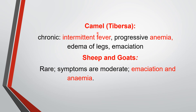In camels, trypanosomiasis is called Thilbursa or Tine Bursa. Generally, a chronic form is found. Characteristic symptoms are intermittent fever, progressive anemia, edema of the legs, and emaciation. In sheep and goats, cases are very rare; symptoms are moderate emaciation, and anemia is a constant observation.